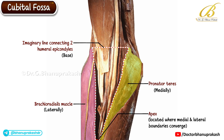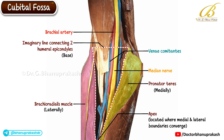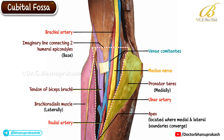Moving on to the contents of the cubital fossa, arranged from medial to lateral: medially, we find the median nerve, which passes between the two heads of the pronator teres muscle as it enters the forearm. Next lies the brachial artery, accompanied by its venae comitantes. Within the fossa, the brachial artery divides into its two terminal branches — the radial and ulnar arteries. The ulnar artery takes a deeper course, while the radial artery runs more superficially and can be identified in the lower part of the cubital fossa. Then we can see the tendon of the biceps brachii along with the cut edge of the bicipital aponeurosis. And finally, on the lateral side, the superficial branch of the radial nerve can be seen.